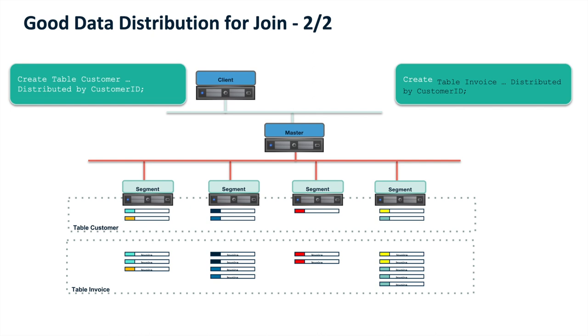When doing a join between a customer table and an invoice table, both distributed by customer_id, the similar customer IDs are stored on the same segment, so joining can be done with local processing only — very fast. Distributed replicated stores the whole customer table on every segment, so you can easily join to it in any case.